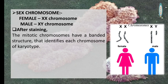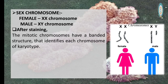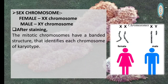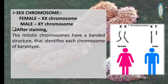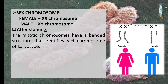After staining, mitotic chromosomes in mitotic division have a banded structure that helps identify each chromosome in a karyotype. We use Giemsa stain to stain the chromosomes. The banding pattern is also called G-banding. In banding, the dark region is heterochromatic and adenine-thymine rich (AT-rich), whereas the light region is euchromatic and guanine-cytosine rich (GC-rich).